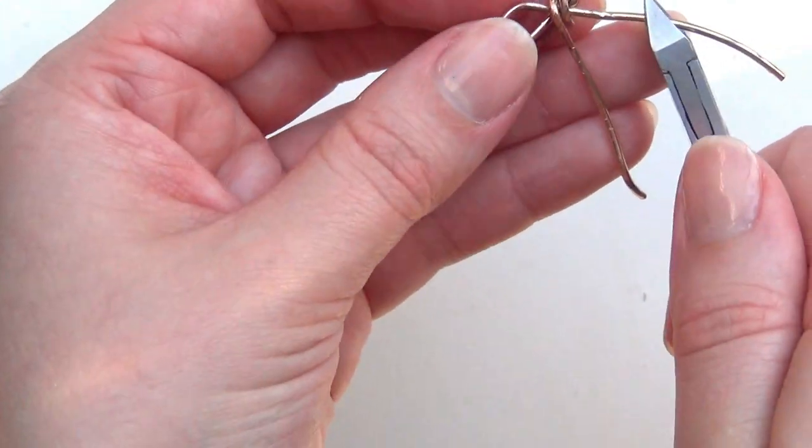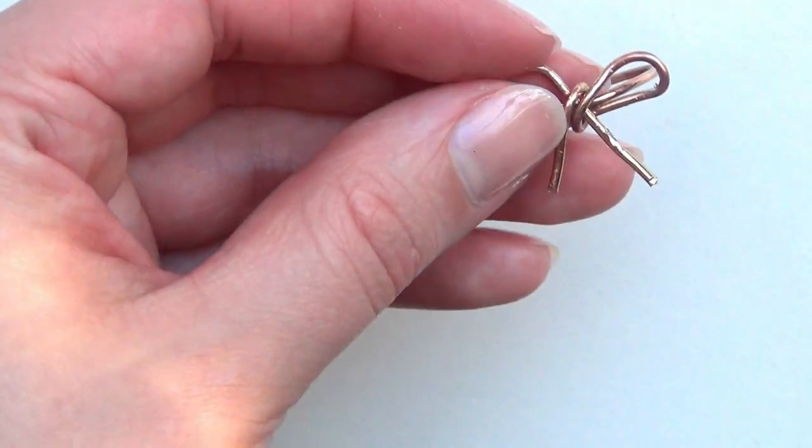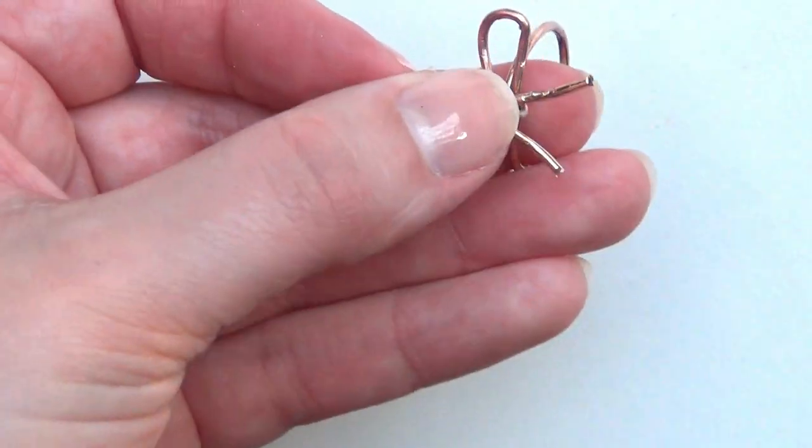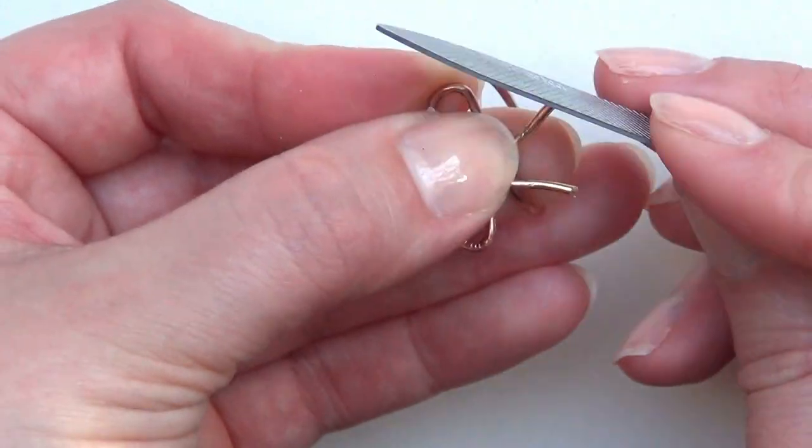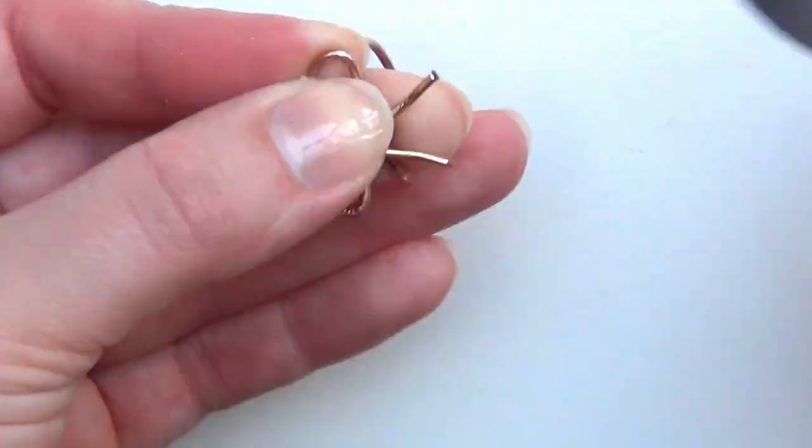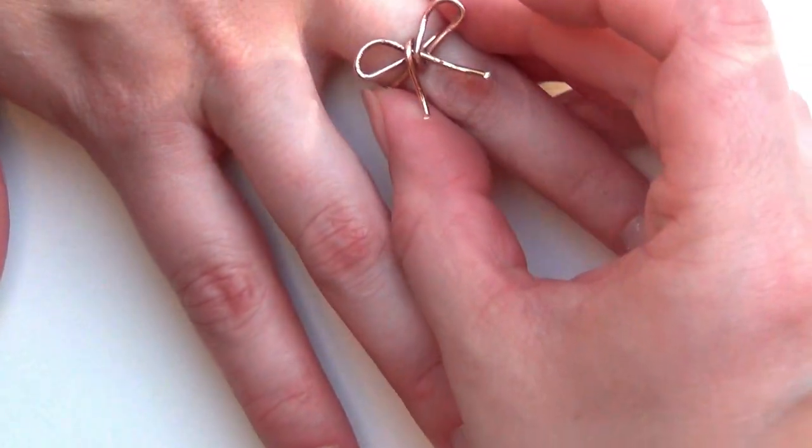This step is optional, but if you have any rough edges you can smooth those out using a metal file. And that is your finished ring.